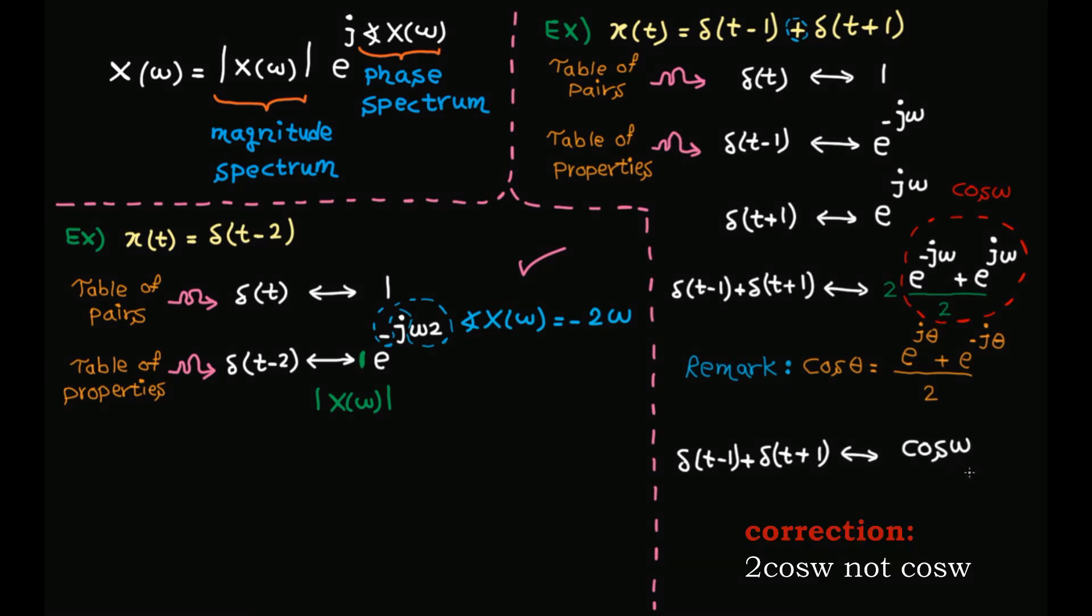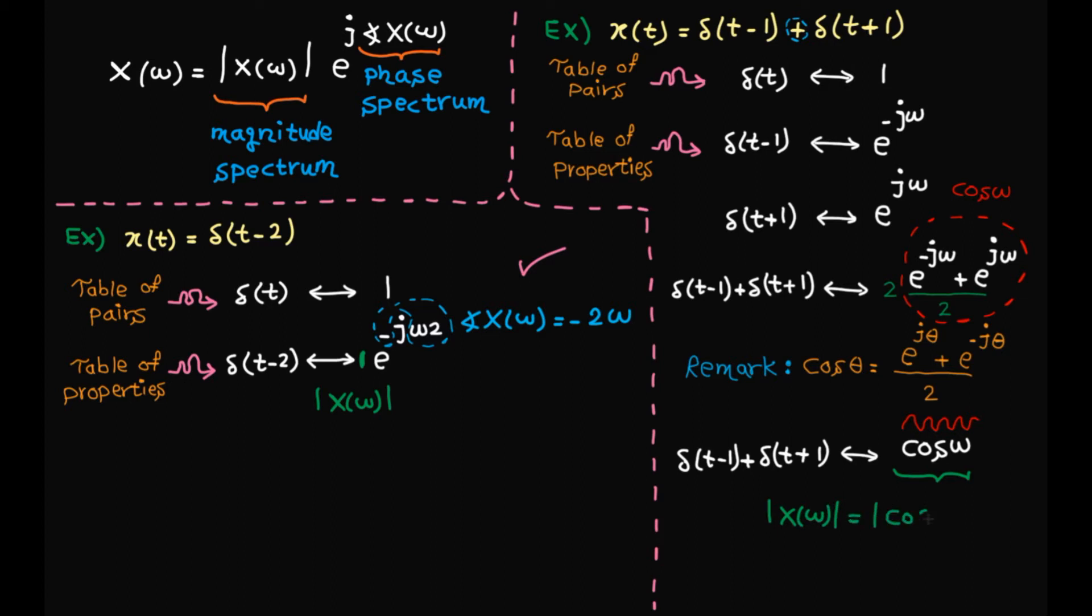The Fourier transform here is a real number as there is no imaginary part. Cosine function is fluctuating between minus 1 and 1. So the magnitude response is the absolute value of cosine omega. What about phase?